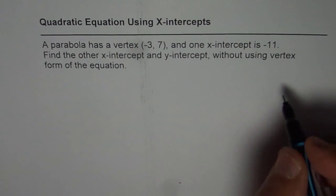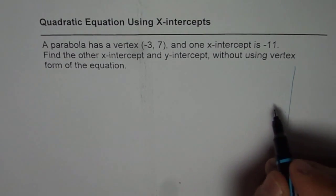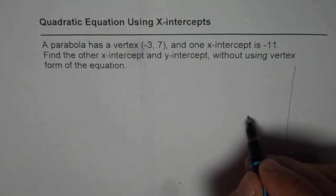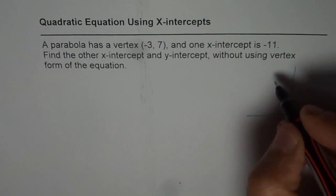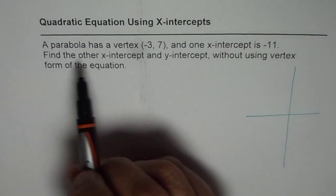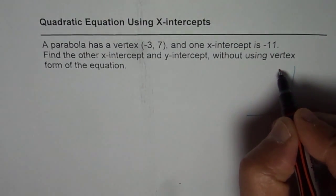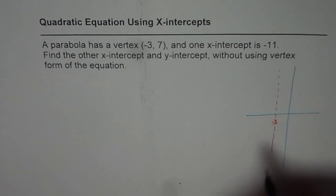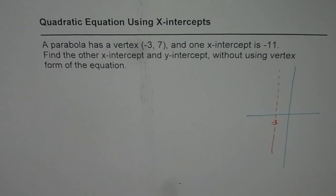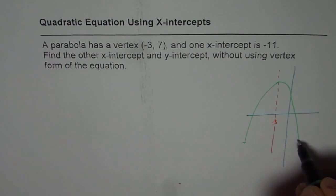So let me first explain how we find the other x-intercept, which I have already done in another video. So what I will do here is quickly go through it. A parabola has vertex of (-3, 7). So that means somewhere along this line which is going through -3, right?